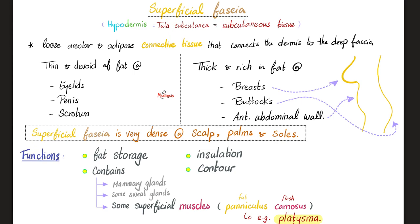Superficial fascia has many functions: storing fat, insulating your body from cold temperature outside, giving you a nice contour. It contains mammary glands, some sweat glands, and some superficial muscles. Yes, muscle inside the superficial fascia — like the platysma. When you find a muscle inside the fascia, you call it paniculus carnosus — the flesh is now in the fat.